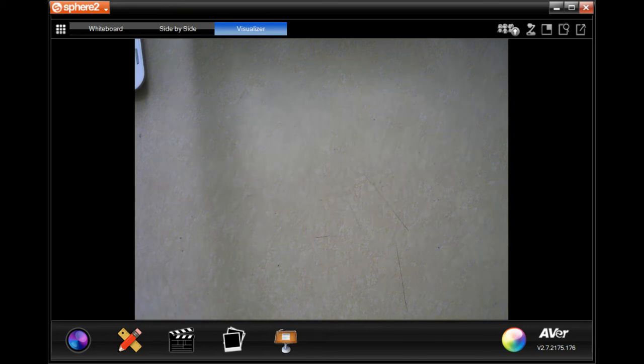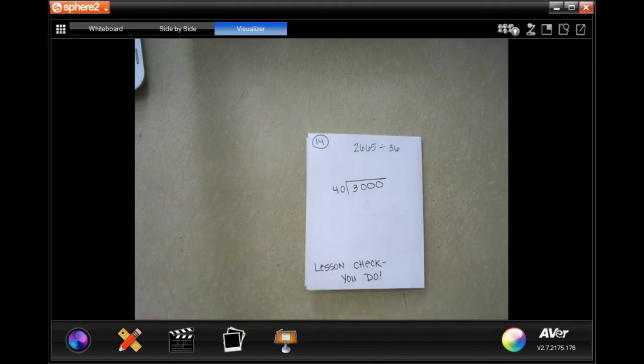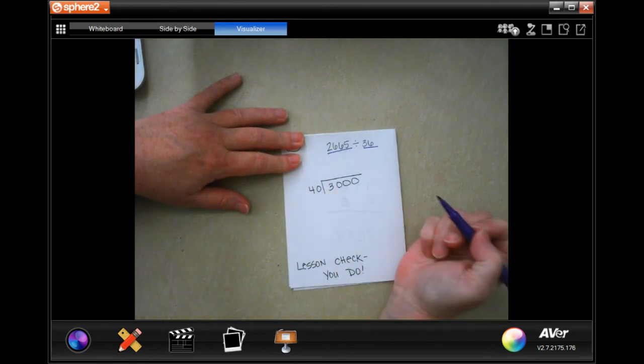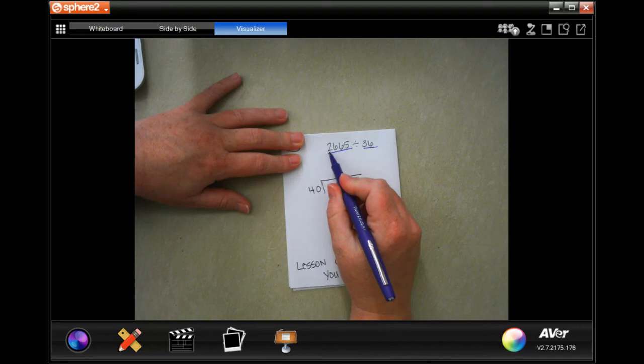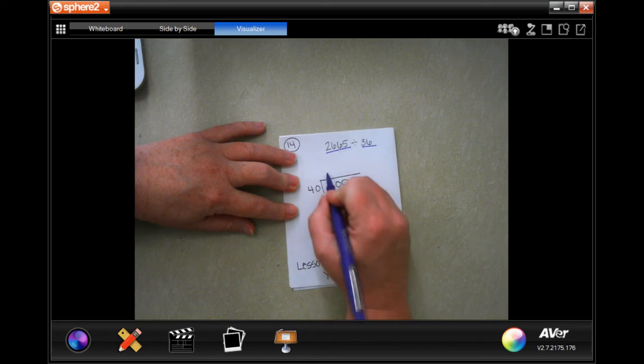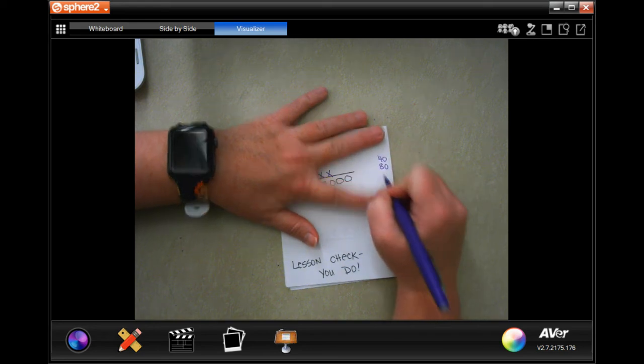We are going to go on to number 14. It says an electronics store places an order for 2,665 USB flash drives. One shipping box holds 36 flash drives. About how many boxes will it take to hold all the flash drives? So I rounded 36 to 40 and 2,665 to 3,000. 40 is not going to go into 3, it's also not going to go into 30. It'll go into 300.